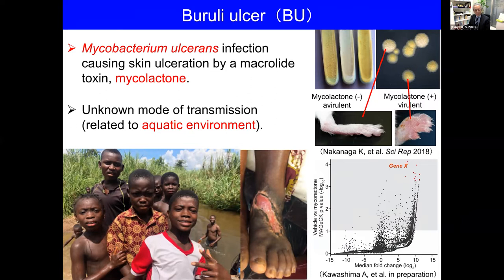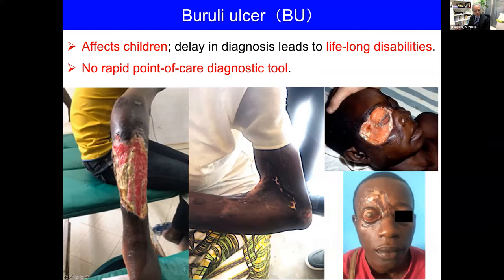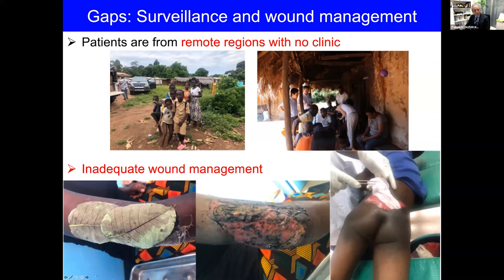Mycobacterium ulcerans leads to widespread ulcer upon infection. Mycolactone, which is a macrolide toxin, causes ulcers — the exact mechanism had not been known, but very recently based on our genome-wide screening, we have identified one gene probably related to Mycolactone which induces this pathogen. This pathogen exists in environmental water sources, so many affected people are children who tend to play in water areas. There is no rapid way of diagnosis, meaning delay could lead to a very debilitating situation, and this could lead to stigma and affect their psyche.